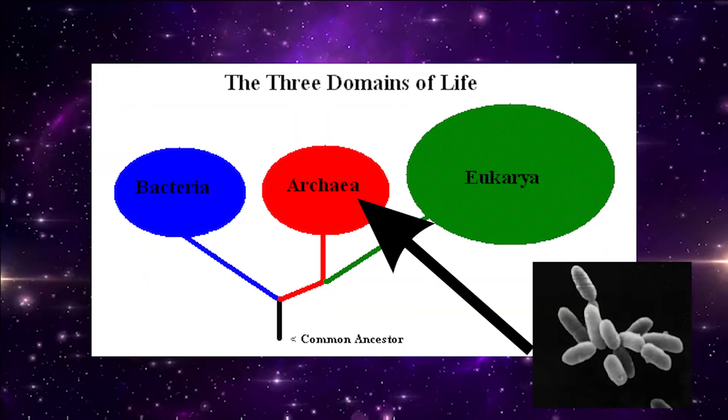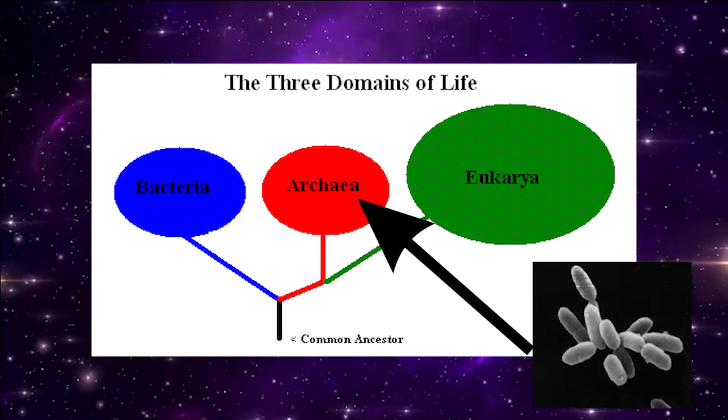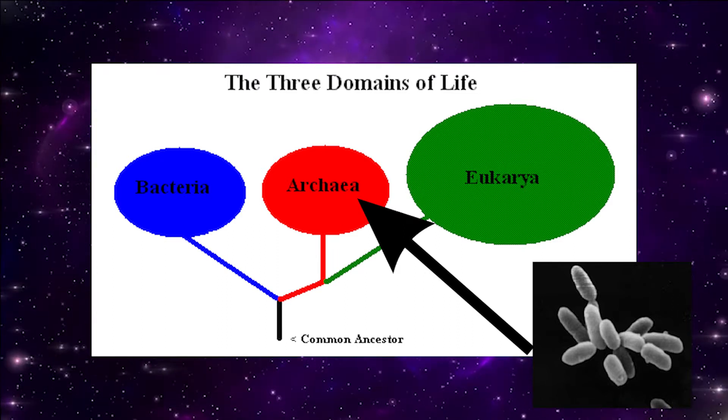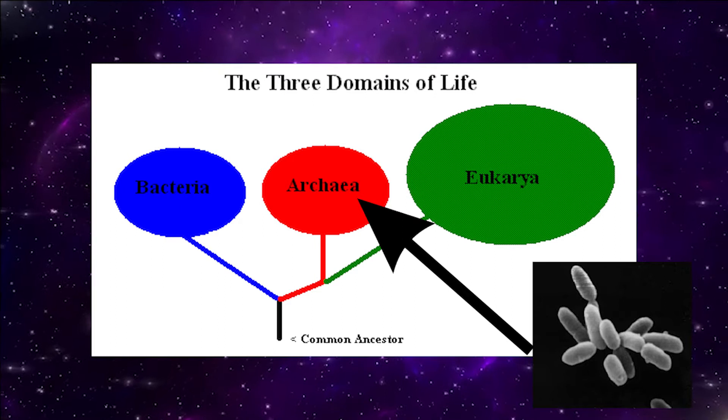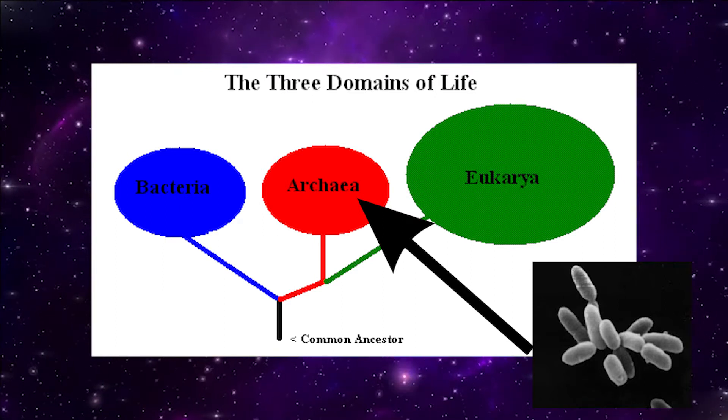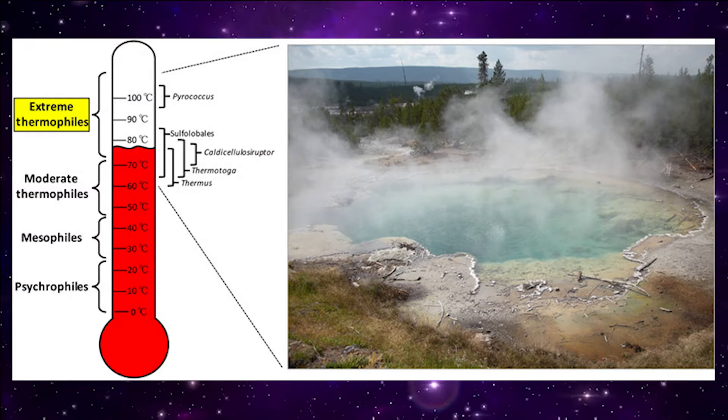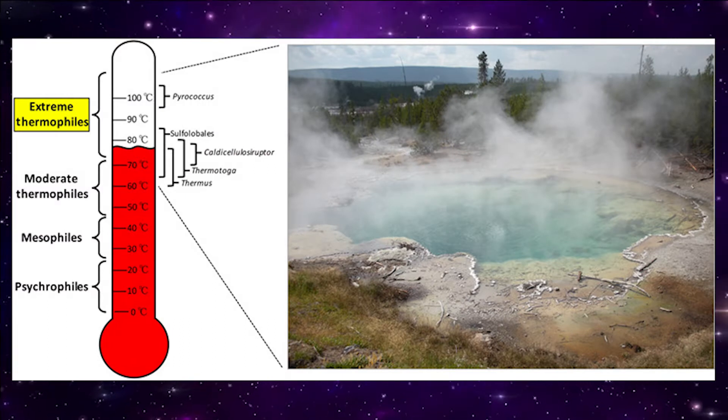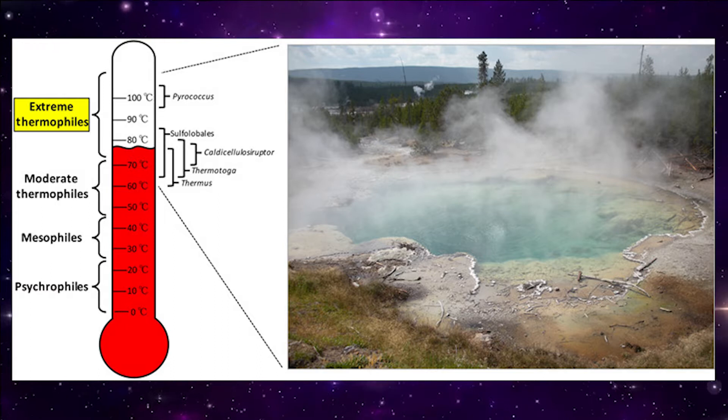Mostly made up of archaea, which is the third and mostly forgotten domain of life next to bacteria and eukarya. Thermophiles thrive at high temperatures, so their proteins can withstand extreme heat.